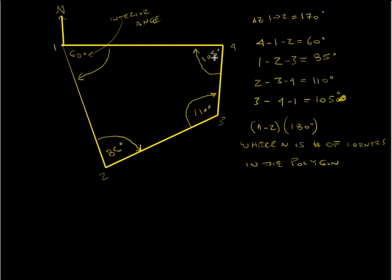Okay, so here we have how many corners? 1, 2, 3, 4. So 4 corners. 4 minus 2 times 180 is what? Well, so 4 minus 2 is 2, 2 times 180 is 360. So do all these angles add up to 360? If they don't, then we have error in our traverse.